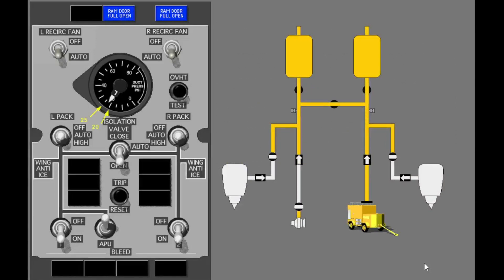When the external air cart supplies air, the bleed air duct pressure should be between 20 psi and 25 psi. If the bleed air duct pressure is less than 20 psi when an external air cart supplies air, use the APU if it is available. To start, select the isolation valve to auto. Now turn on the APU bleed.